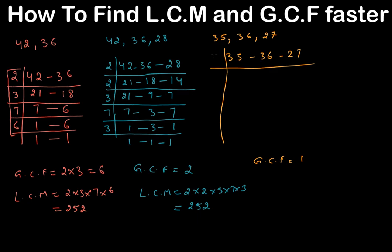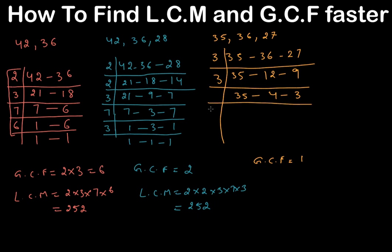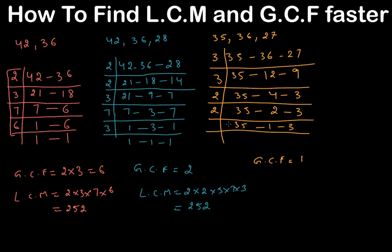If 3 doesn't go into a number, leave it as it is. So 35 stays, 3 times 12 is 36, 3 times 9 is 27. Try 3 again: leave 35, 3 times 4 is 12, 3 times 3 is 9. Then try 2: leave 35 and 3, 2 times 1... let's keep going to show the full process.